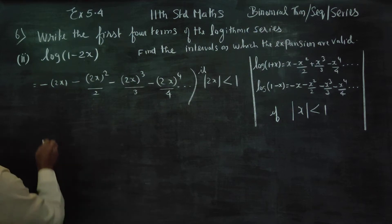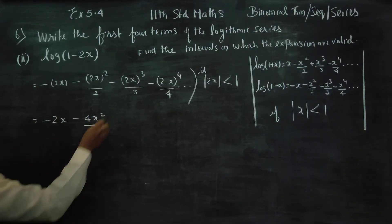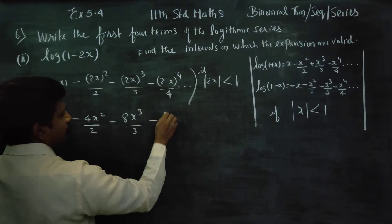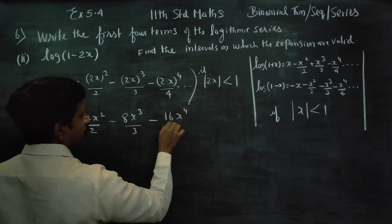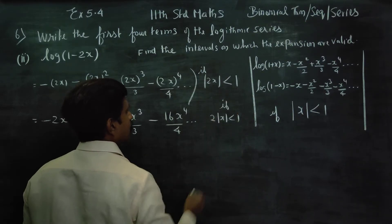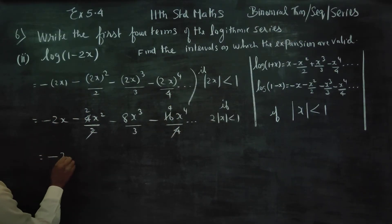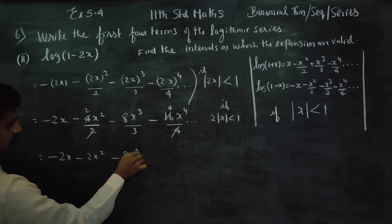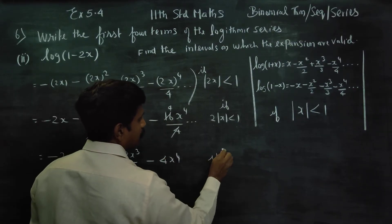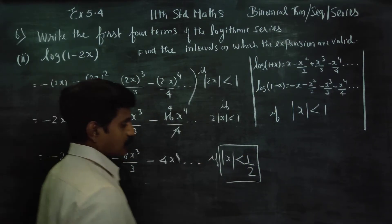Simplifying: the answer is minus 2x, minus 4x²/2, minus 8x³/3, minus 16x⁴/4, and it goes on. After cancellation this becomes: minus 2x minus 2x² minus 8x³/3 minus 4x⁴, with the condition that modulus of x is less than 1 by 2.